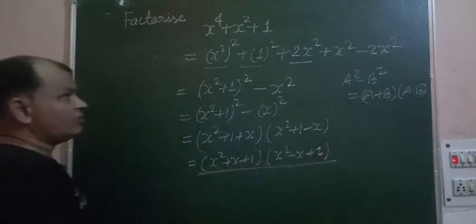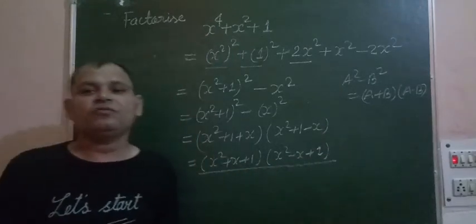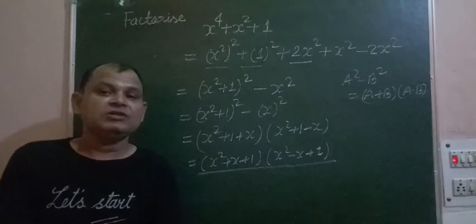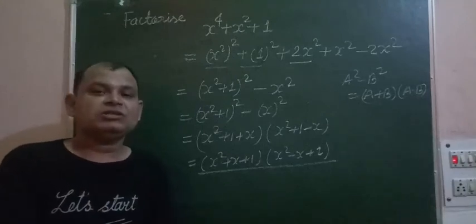So these are the factors of the given expression x to the power of 4 plus x squared plus 1. This is the solution of the question, I hope you got it.